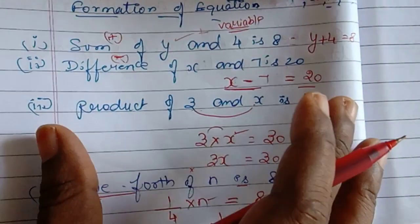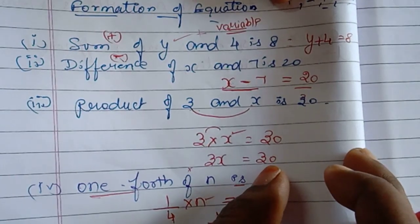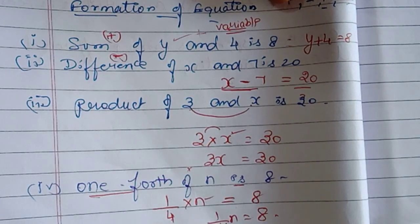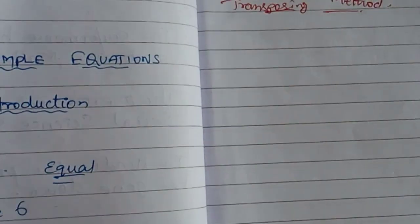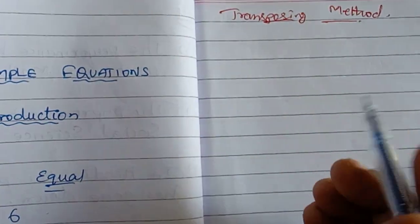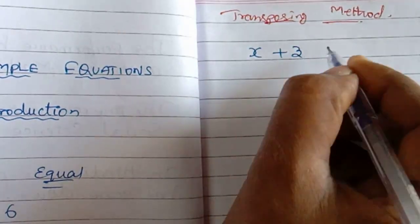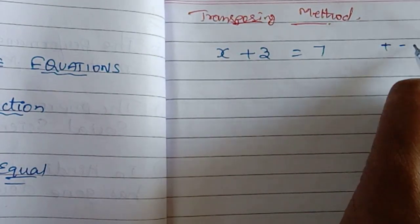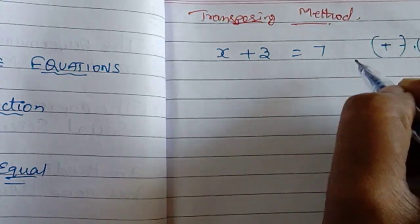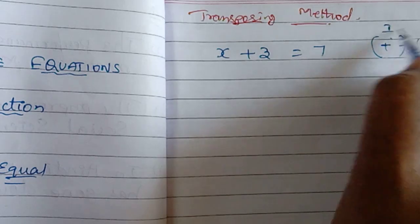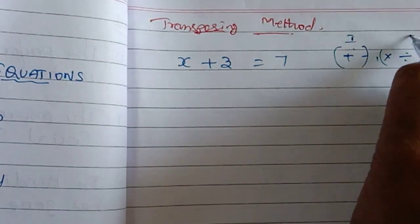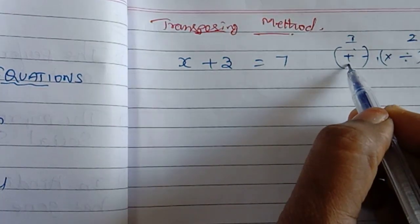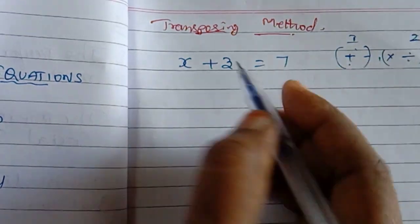This is another method. If we get a sentence, we will get a form of equations. If we get equations, we will solve them. In this case, we will use the transposing method. We will get an equation: X plus 3 is equal to 7. In transposing, plus becomes minus, minus becomes plus, product becomes division, division becomes product.